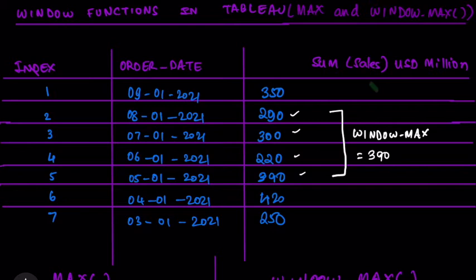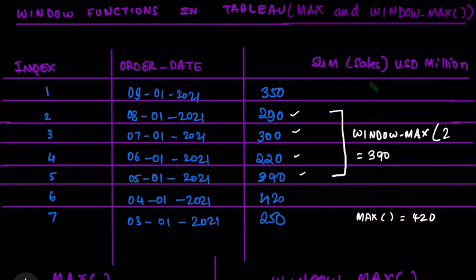So your MAX for this table would actually return 420, whereas your WINDOW_MAX from record number 2 to record number 5 is going to be 390.